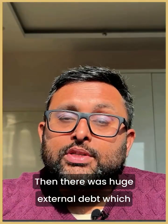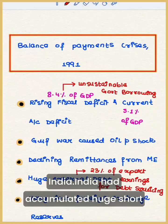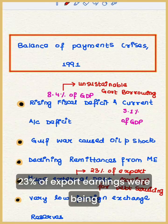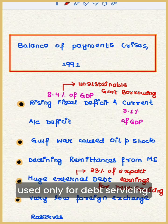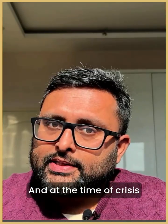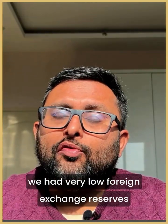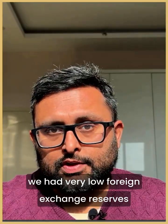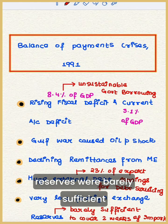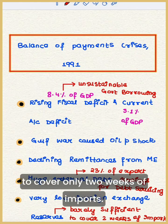Then, there was huge external debt. India had accumulated significant short-term external debt which had to be repaid. By 1991, 23% of export earnings were being used solely for debt servicing. Adding to the crisis, India had very low foreign exchange reserves — barely sufficient to cover only two weeks of imports.